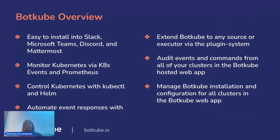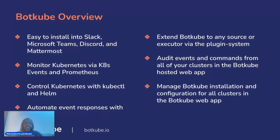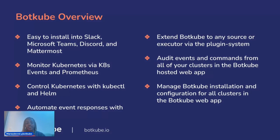For a quick overview: it works with most major messaging platforms like Slack, Teams, Discord, and Mattermost, and it allows you to monitor Kubernetes events via community resource events and Prometheus. You can get events like networking issues, permission issues, and things like not having access to a Docker image — all into Slack. You're also able to control Kubernetes with kubectl, running things like get pods, logs, and Helm commands right in your messaging platform.